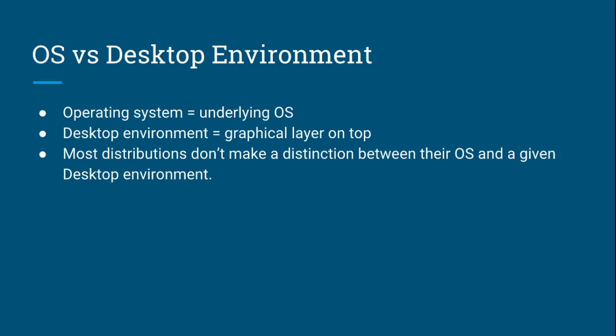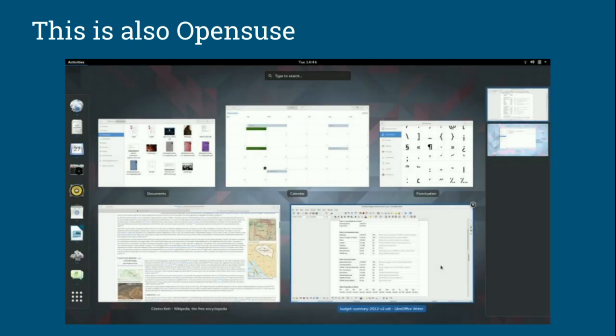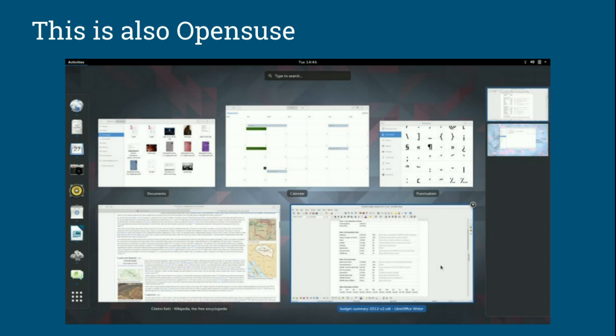Here's a picture of OpenSUSE running KDE — a desktop environment — and this is what it looks like. This is also OpenSUSE, but running GNOME — technically pronounced 'guh-NOME' but I'm not going to do that because I don't play those games. These two may look very different — start bar at the bottom versus an activities panel — but they are the same underlying OS. They look different, but at their core they are the exact same thing.